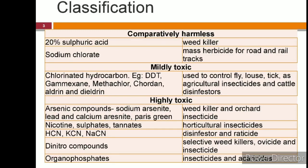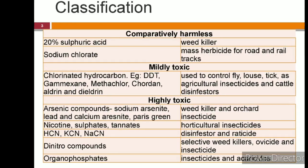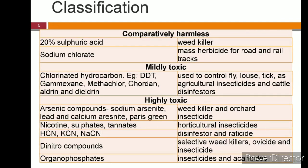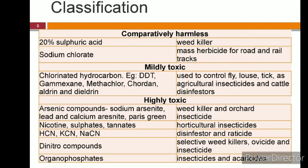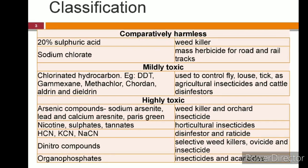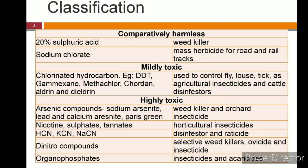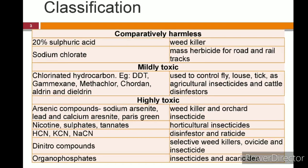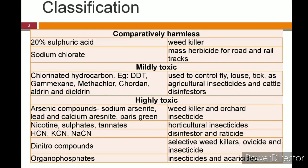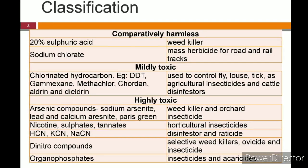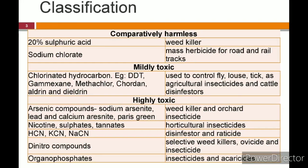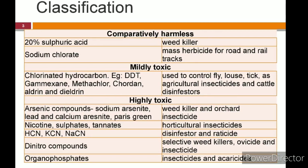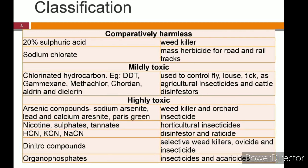The comparatively harmless chemicals include 20% sulfuric acid and sodium chlorate. They are most commonly used as mass herbicides for road and rail tracks. Mildly toxic chemicals include chlorinated hydrocarbons like DDT, methachlor, chlordane, aldrin, and dieldrin. They are used to control fly, louse, and tick as agricultural insecticides and cattle disinfectants.